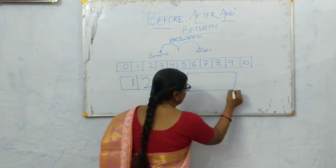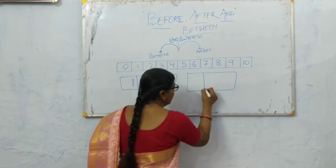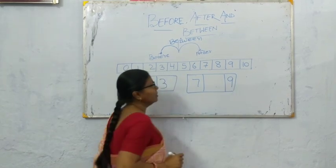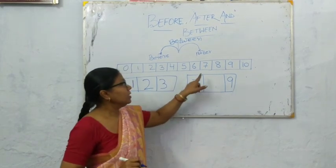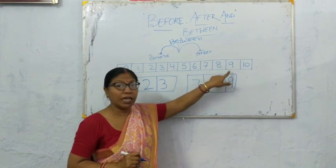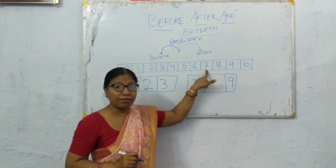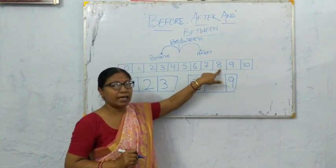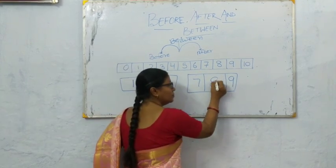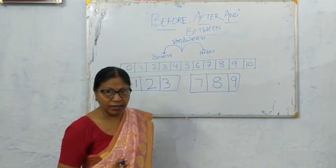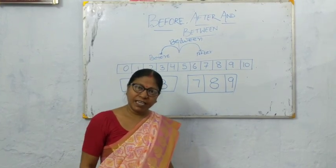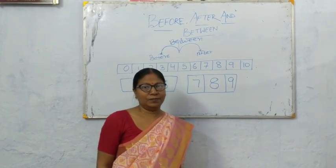Next: 7 and 9. See the number strip — which number comes in between 7 and 9? The answer is 8. Okay children, that's all for today. I will see you in the next class.